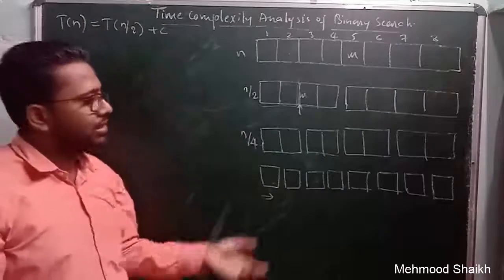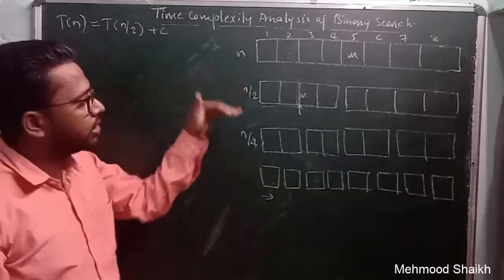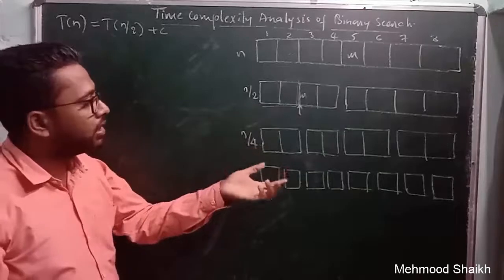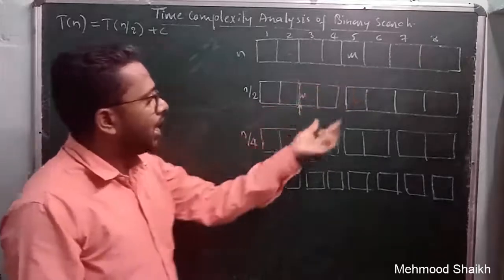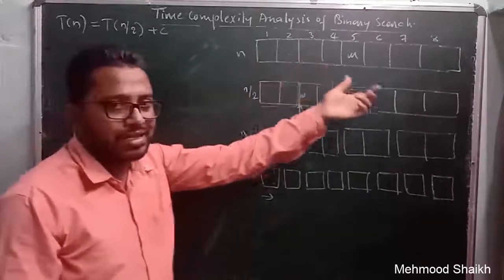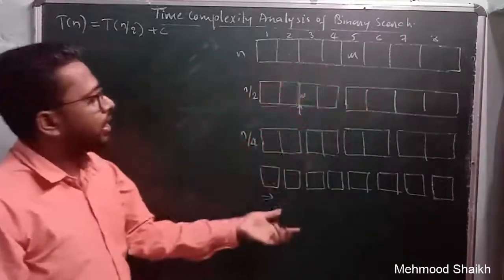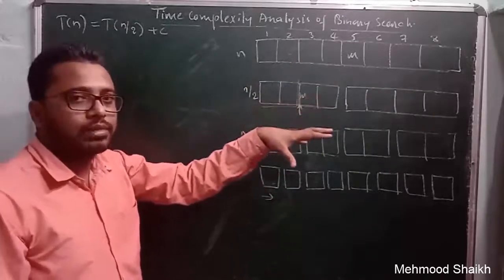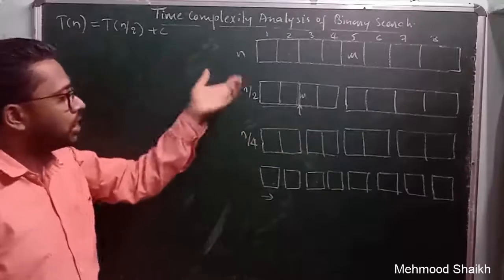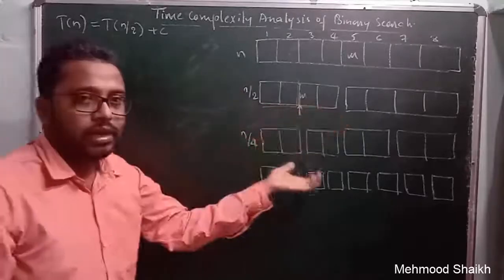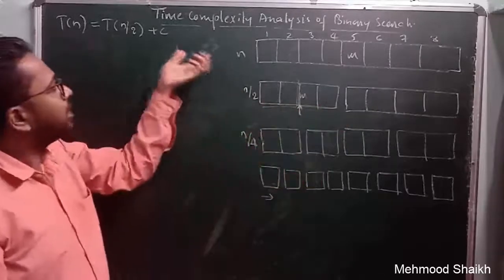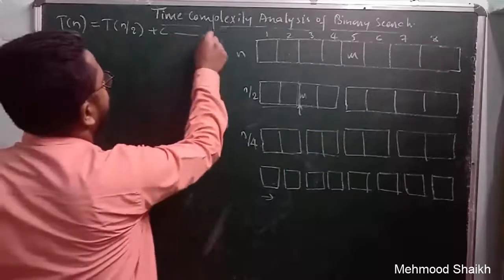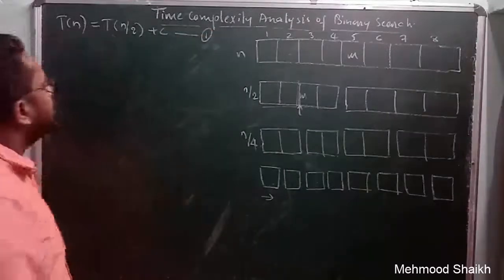The constant c represents the time for other operations in each iteration, such as finding the middle location and checking whether low is less than high. This constant time applies to every iteration.